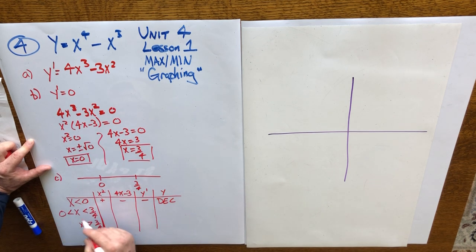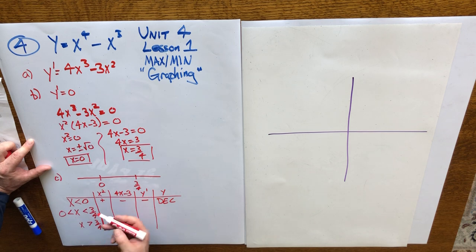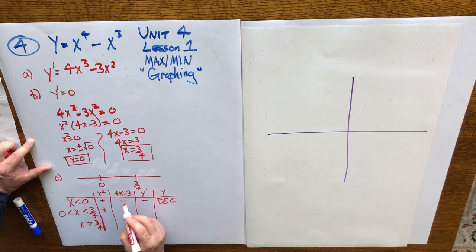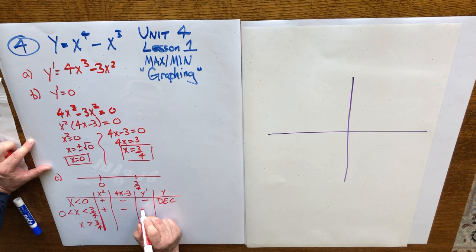Let's take a number in between 0 and 3 quarters, like 0.5 or 1 half. When you square it, you get a positive. 4 times 0.5 subtract 3 is still a negative. A positive times a negative is still a negative. The function is still decreasing.